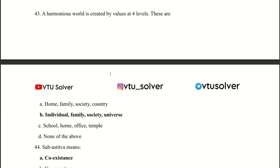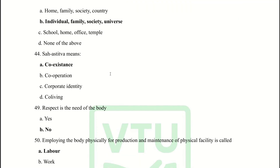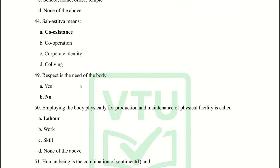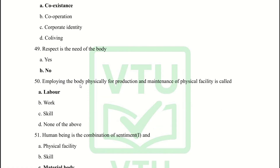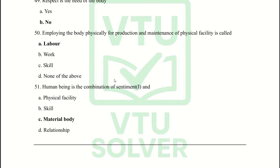Next question: A harmonious world is created by values at 4 levels: Individual, Family, Society, and Universe. Next question: Activity means co-existence. Next question: Respect is the need of the body — No. Next question: Employing the body physically for production and maintenance of physical facility is called Labor. Human being is a combination of self and material body.